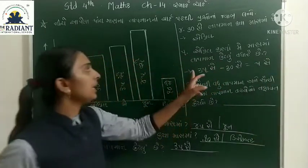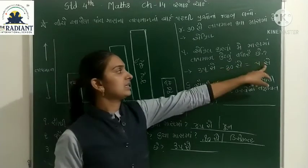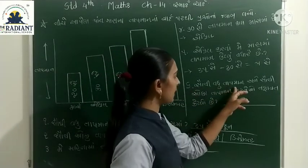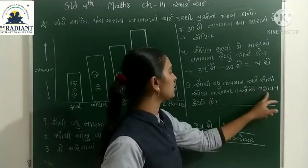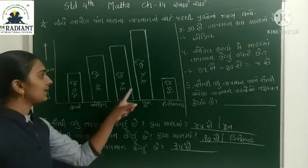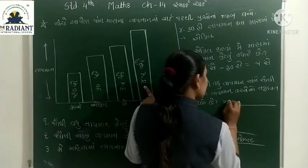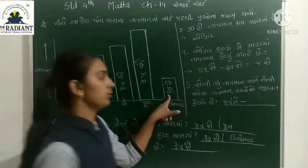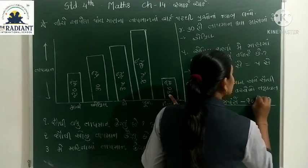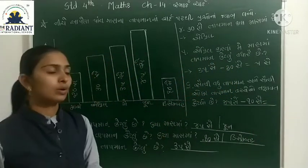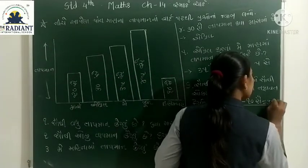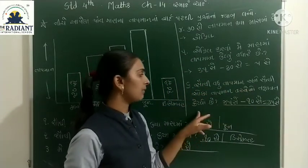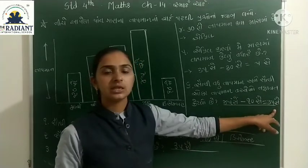એટલે એપ્રિલ કરતાં મે મહિનાનું તાપમાન 5 સેલ્સિયસ વધારે છે. આગળ - સૌથી વધુ તાપમાન અને સૌથી ઓછા તાપમાન વચ્ચેનો તફાવત કેટલો છે? સૌથી વધારે અને સૌથી ઓછા તાપમાન વચ્ચેનો તફાવત પાંત્રીસ સેલ્સિયસ.